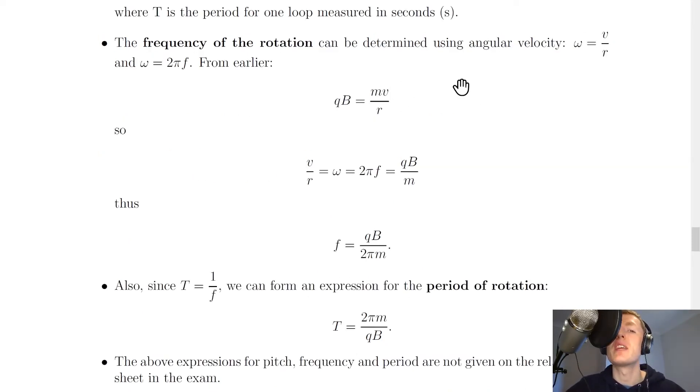As well as the pitch of the helix, you could also be asked to derive an expression or calculate the frequency of the rotation, and we can determine this using the angular velocity omega equals v over r, which you saw in the rotational motion topic, as well as omega equals 2 pi f. So from the theory video for a charge moving perpendicular to a magnetic field, we saw that we can equate the two forces for magnetic force and centripetal force, and that's because the magnetic force causes the centripetal force to happen.